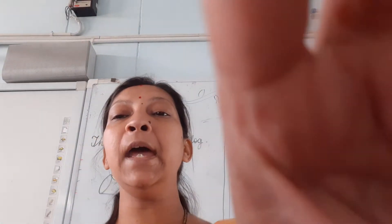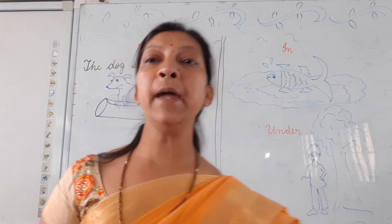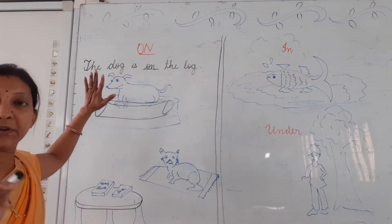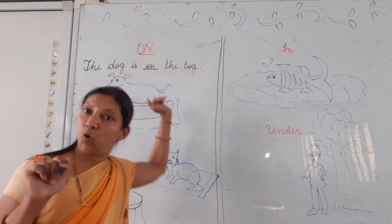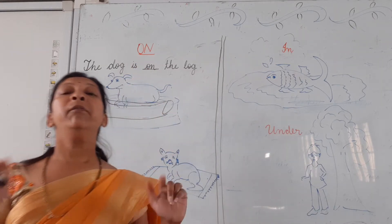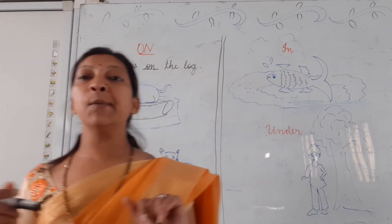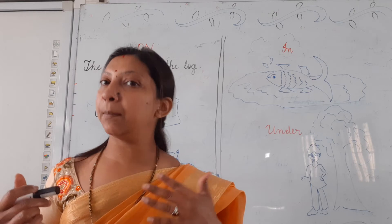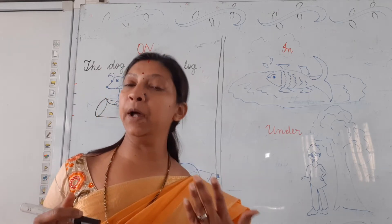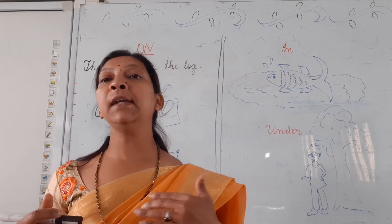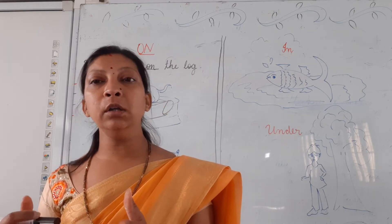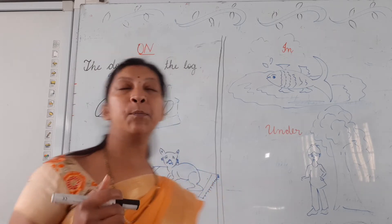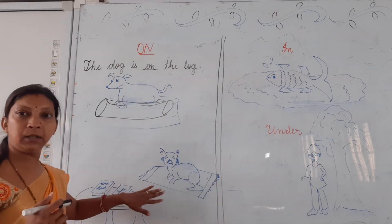On ka matlab hota hai oopar. Just remember, on means oopar. A book kahaan rakhte hoon? Table ke oopar. So, the book is on the table.